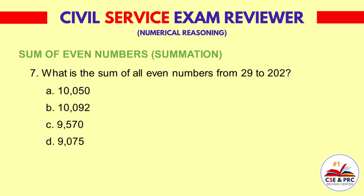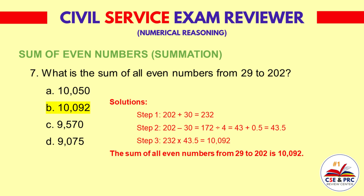Question 7: What is the sum of all even numbers from 29 to 202? a. 10,050  b. 10,092  c. 9,570  d. 9,075. The answer is b. 10,092.